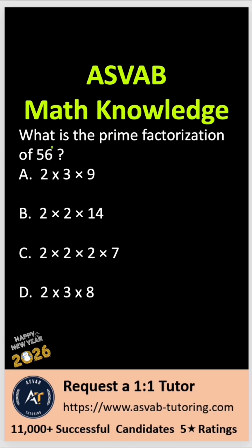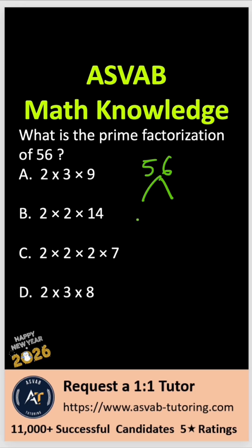In order to solve this problem, you have to write 56 in terms of a factor tree. The prime numbers are the numbers you can only divide by one and itself. So let me write that down. You have 56 here. You need to make a factor tree, so always start with 2. If it doesn't work with 2, then try 3, then 5, and so on.